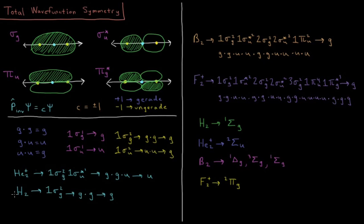For H₂, the configuration is 1σg². That's g times g, which is g. The H₂ term symbol we saw was a singlet sigma, and now we know it is singlet sigma g.